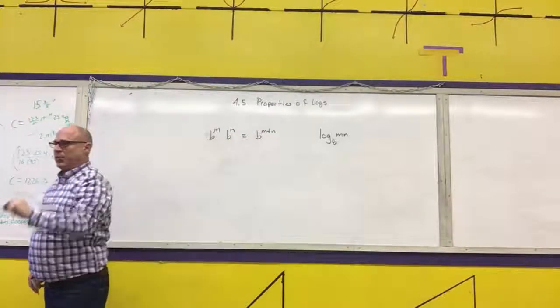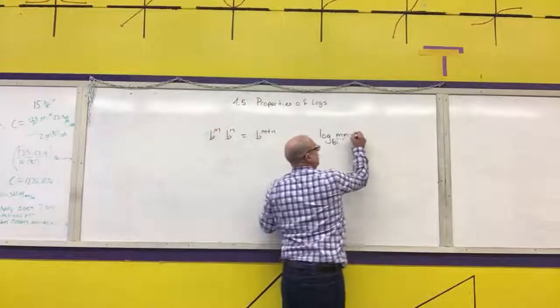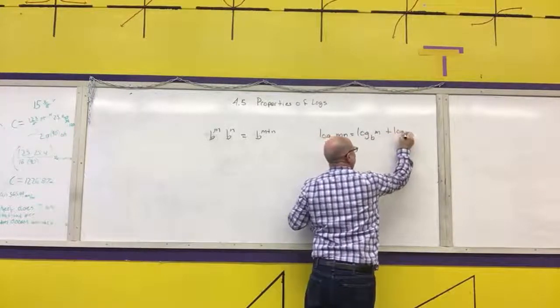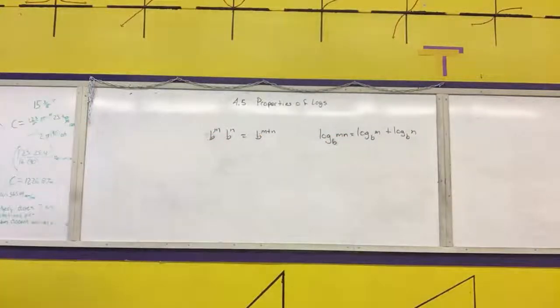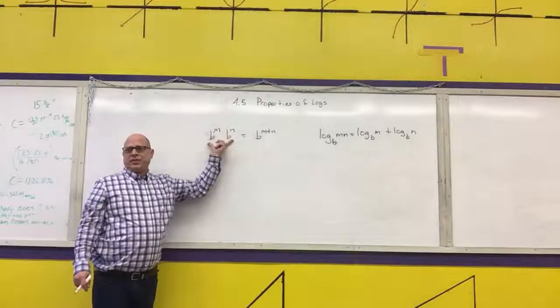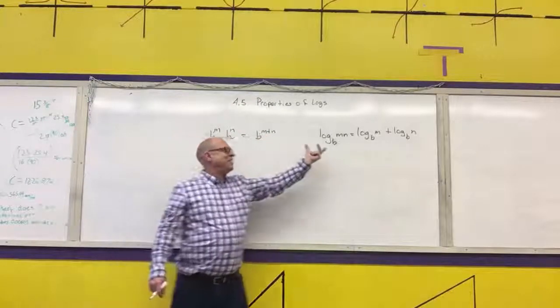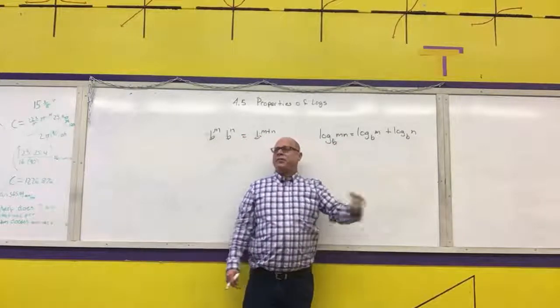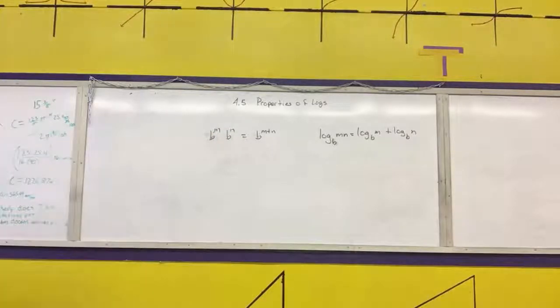Remember that logarithms are just exponents, right? Yes. This can be rewritten as log base B of M plus log base B of N. A product of exponents is equal to the sum of the exponents. A product of a logarithm is equal to the sum of the logarithms, because logarithms are just exponents. Does everybody understand that? Logarithms are just exponents.